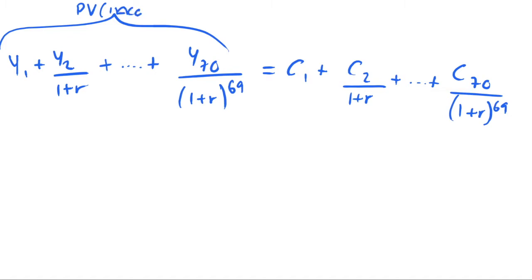And as we had in our two period model, our budget constraint is present value of income equals present value of consumption. When we're thinking about period 70 consumption and period 70 income, we're thinking of consumption 70 years in the future because we're currently in time period one.